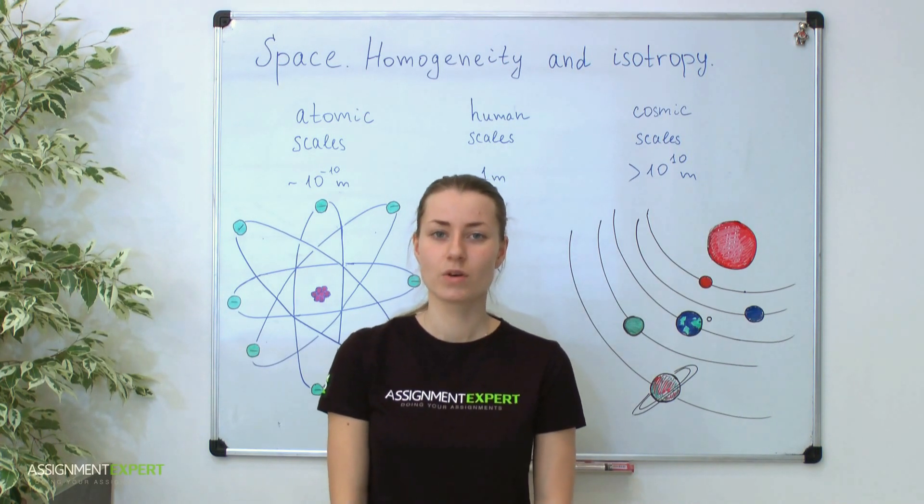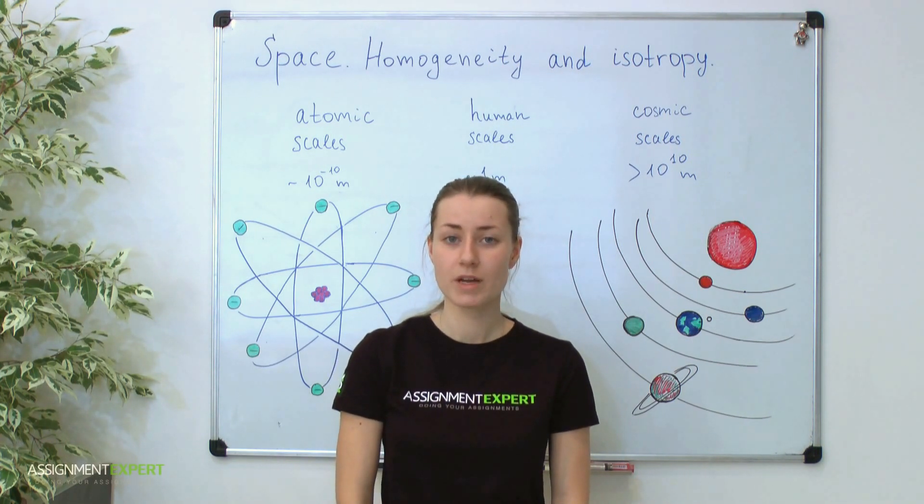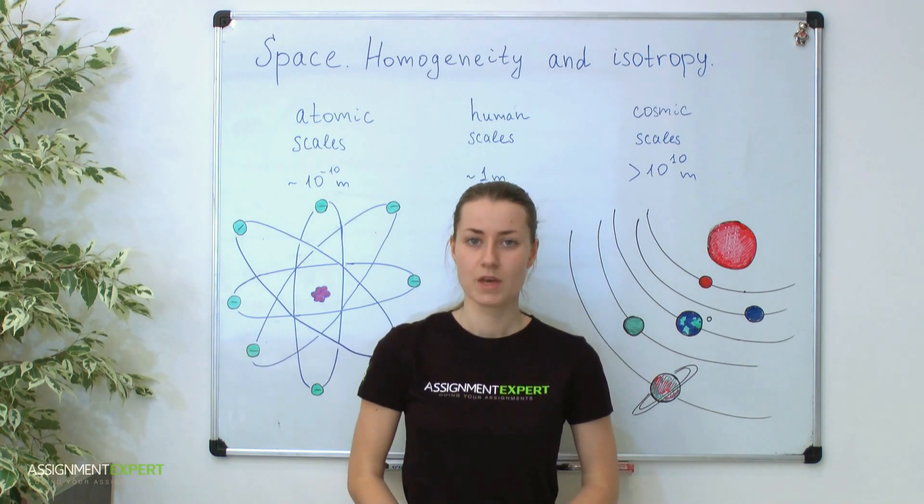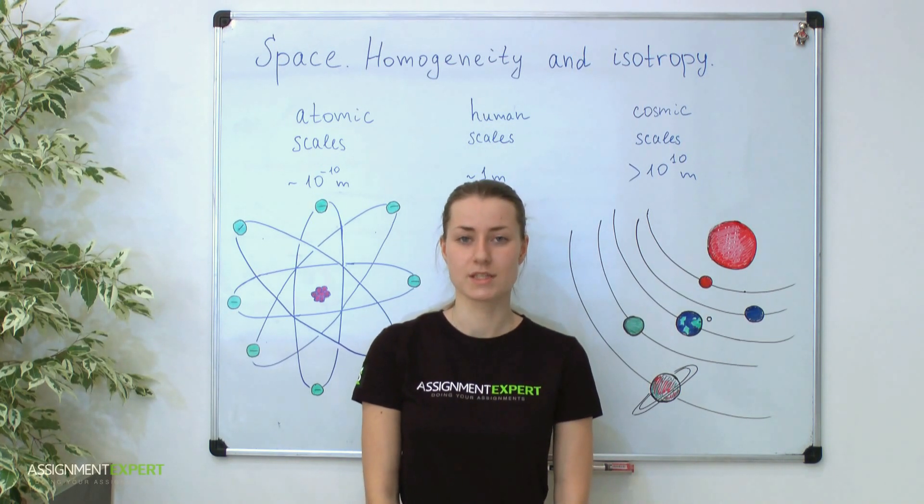In addition, according to Einstein's general relativity, massive bodies curve space near their vicinity. Again, we can reconcile this with our rubber description. If we put a heavy object on the rubber, of course, it sags.